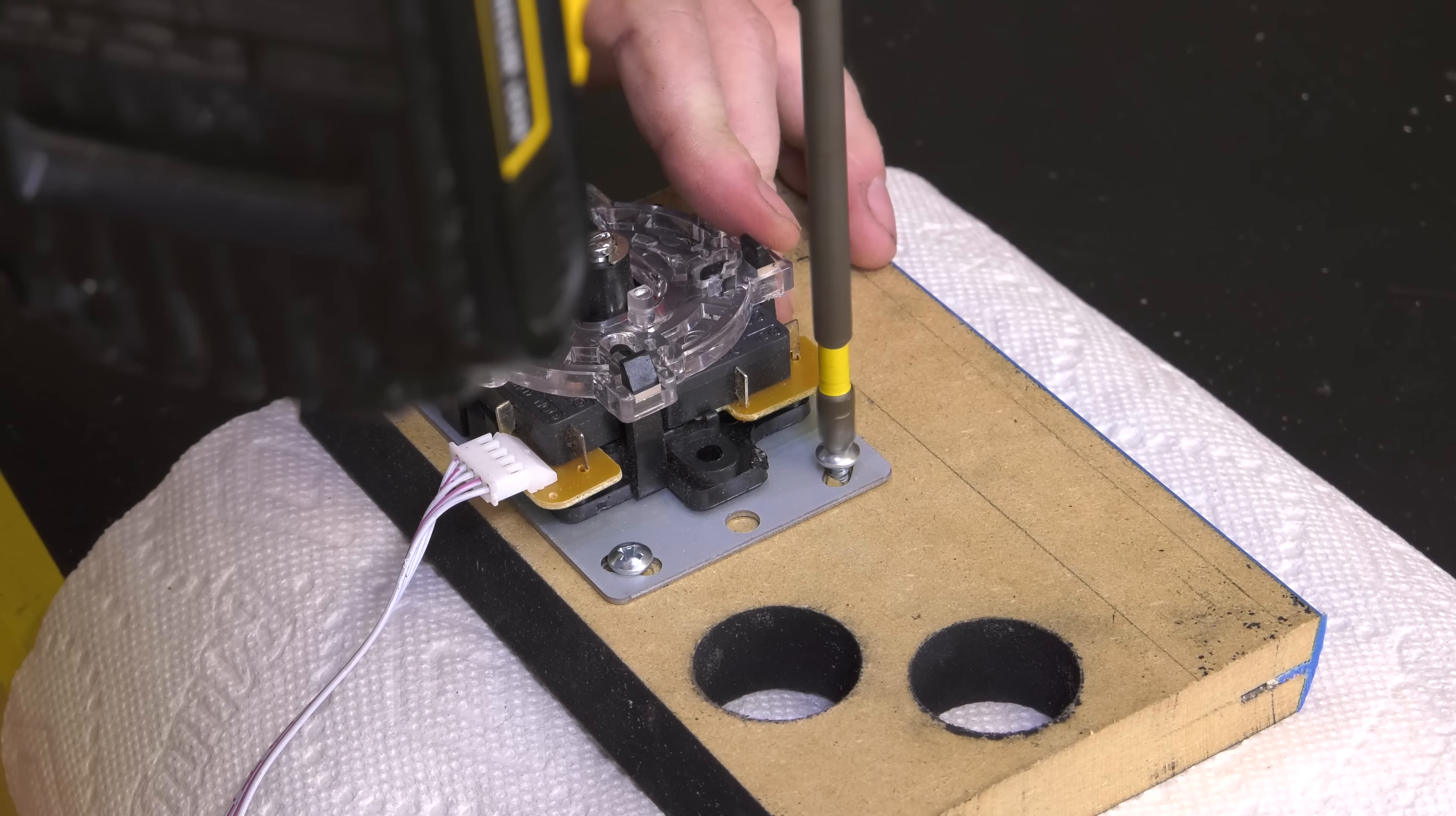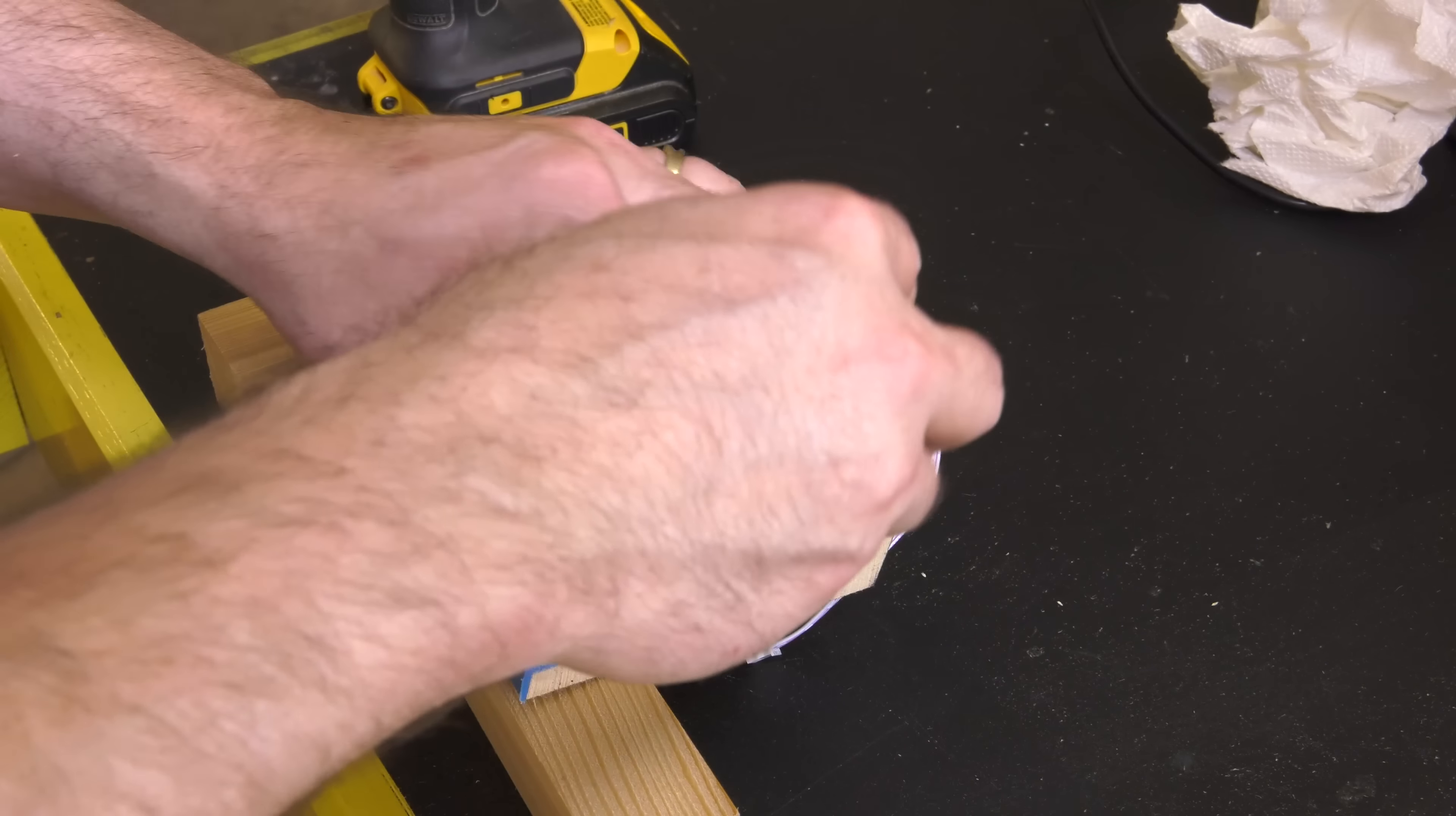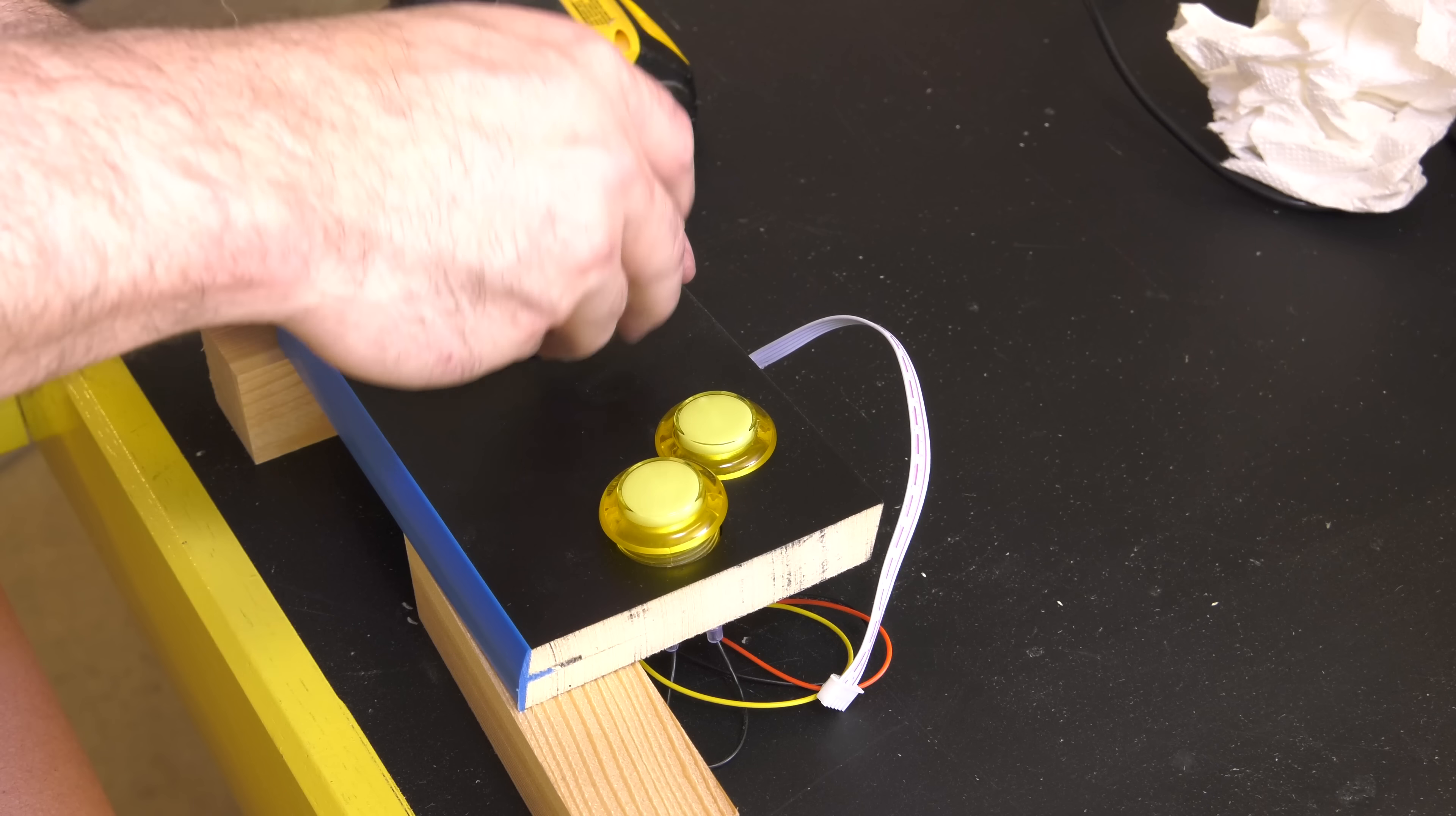At this point, I installed the joystick and the buttons on the control panel. This just takes four screws and a couple of plastic nuts. The joystick comes with a plastic donut that covers the hole. Don't forget to install it before screwing in the ball onto the top of it.